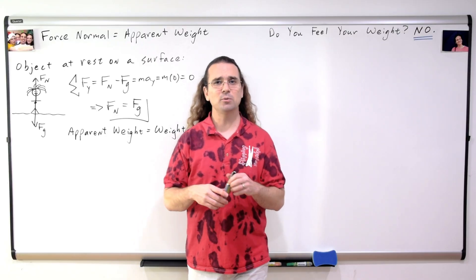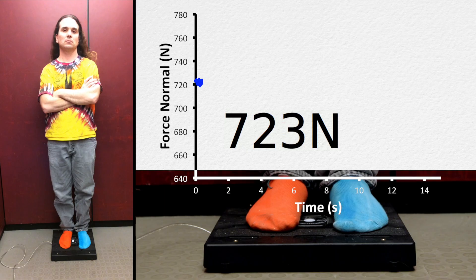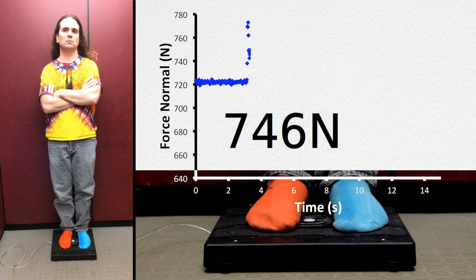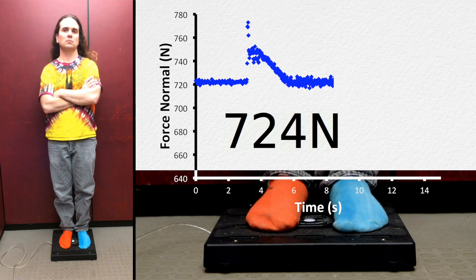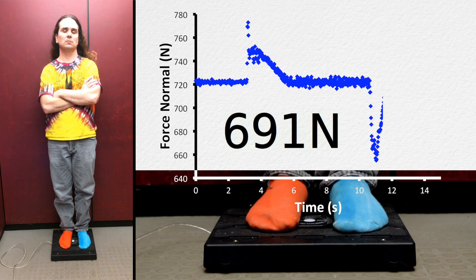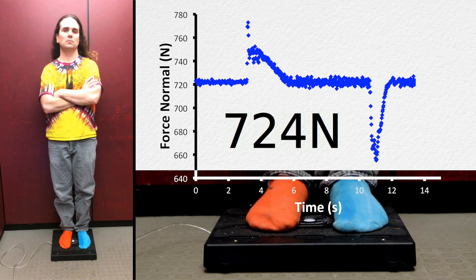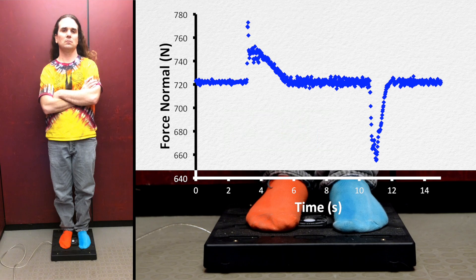Now let's put Bo in an elevator which is about to move upward. It just started to move upward and now is moving at a constant velocity. And now it has stopped. Bo, please describe what your weight felt like while that was happening.